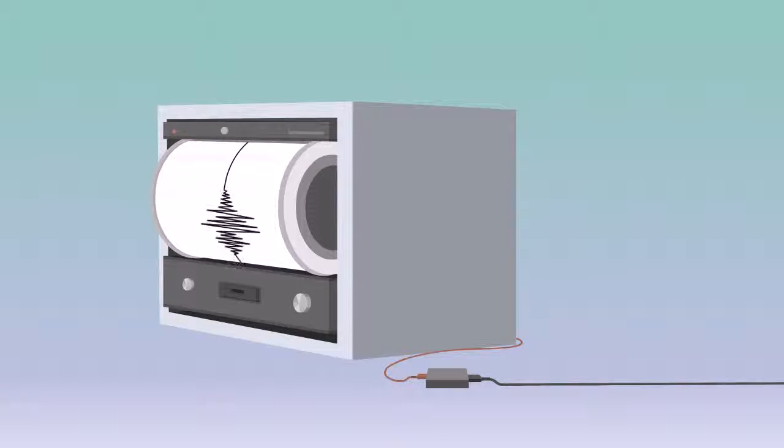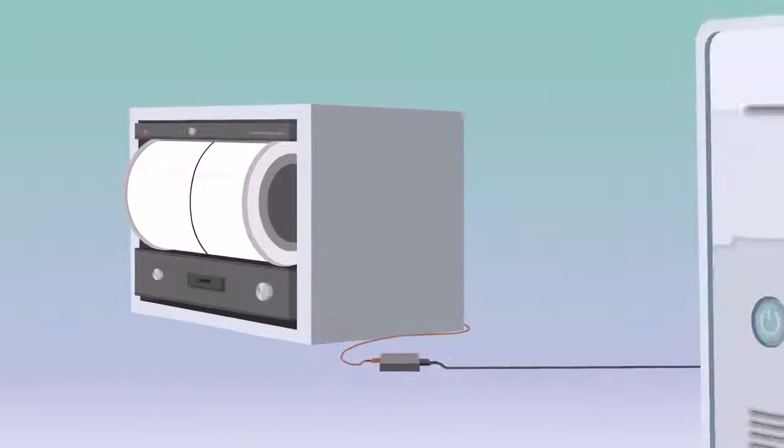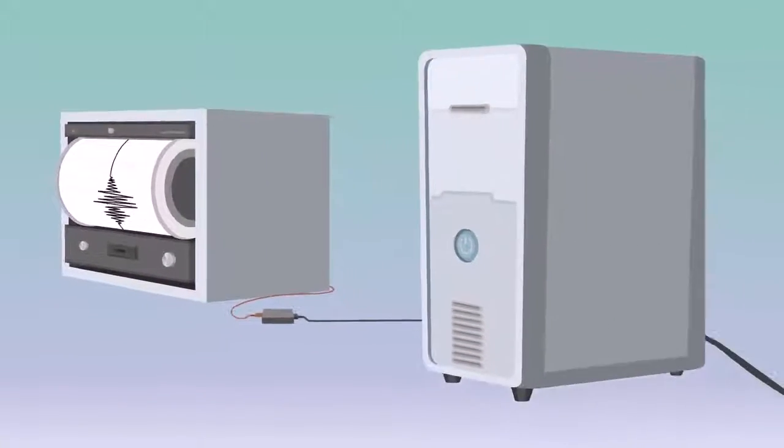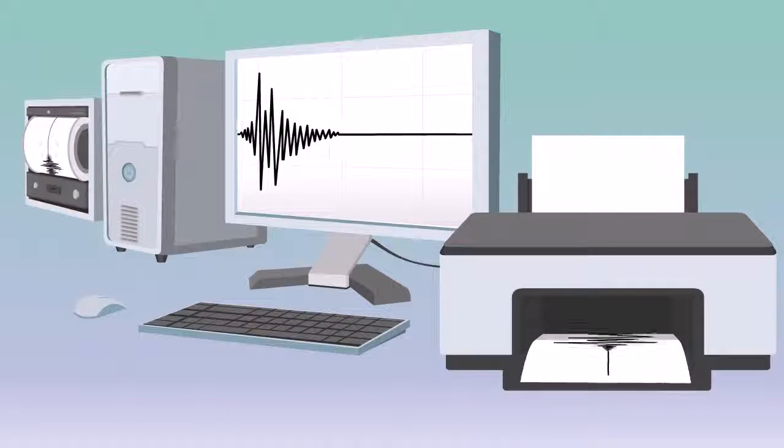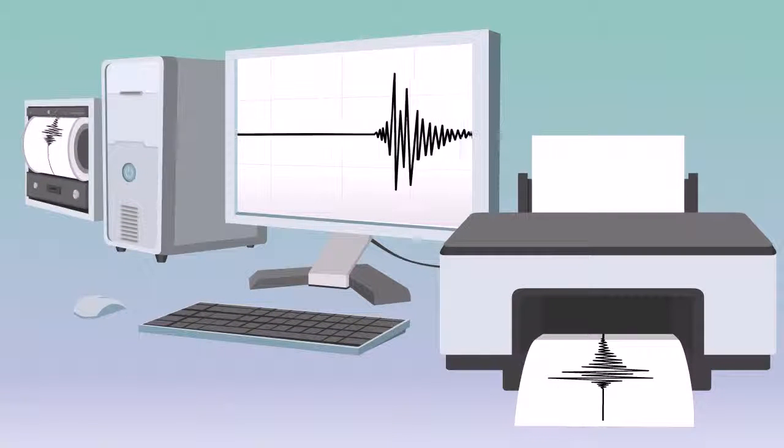Modern seismometers have electromagnetic sensors that convert ground motions into electrical signals. These signals are processed by the instrument's digital circuits and presented on a display screen or paper printout as a seismogram.